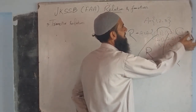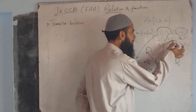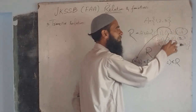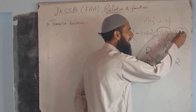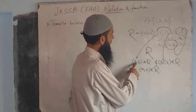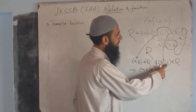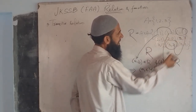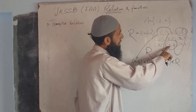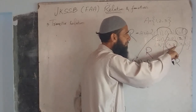For example, (1,3) is an element here, and (3,2) is also an element. So we have (a,b) = (1,3) and (b,c) = (3,2), which means (a,c) = (1,2) should also belong to R for transitivity.